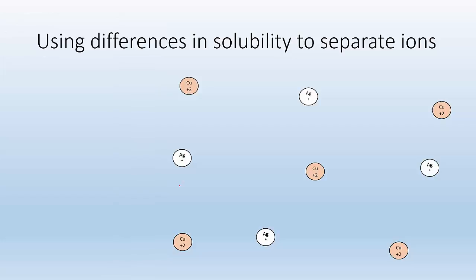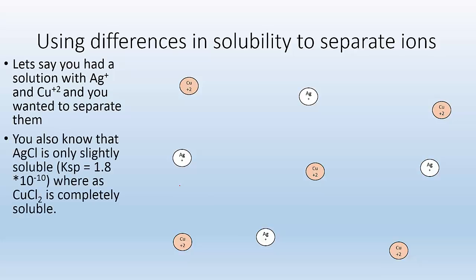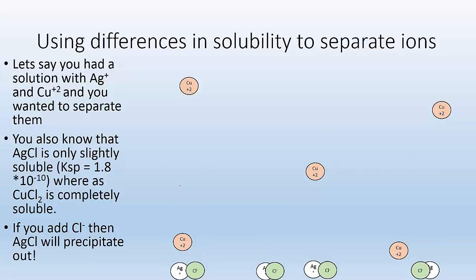We can use these differences in solubility to separate ions. So let's say you had a solution with Cu+2 ion and Ag+ ion. And we want to separate them. You also know that AgCl is only slightly soluble. Ksp is 1.8 times 10 to the minus 10, whereas copper chloride is completely soluble. So if I add a little chloride ion, the AgCl will precipitate out. So I add some chloride ion. Maybe I add some sodium chloride, whatever. Get the chloride ion in there. And when the chloride ion bumps into the silver ion, it's going to form a solid and it's going to precipitate out. So these chloride ions are going to find silver ions and they're going to hold onto them because they're not highly soluble. They're barely soluble. And then they're going to sink to the bottom and precipitate. Now you've got a solution with just the copper ion in there.